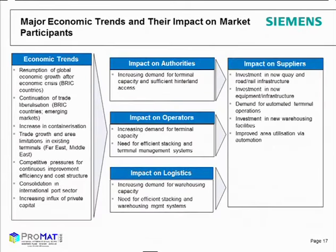Regarding economic trends, current forecasts of GDP per capita show rising levels of wealth, for example in BRIC countries. The increasing number of container goods leads to pressure for continuous improvements and efficiency in terminals, because there is a need for more capacity and sufficient hinterland access. Terminal operators need to invest more in equipment and infrastructure, and they are asking for automated terminals.